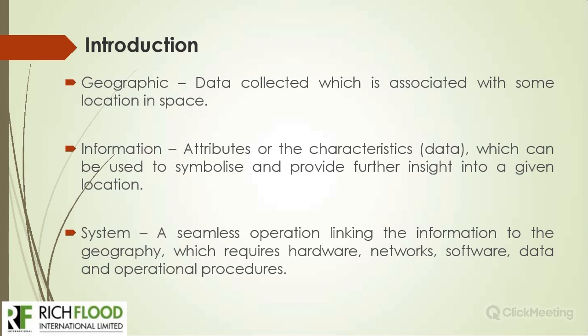Information itself refers to the attributes or characteristics — the data — which can be used to symbolize or provide further insight to the location. The information or data that we get from the field has characteristics which you can actually describe, just like humans. We are all different in our own unique way — some people are tall, some are short. So all the information collected which is used in this technology has attributes, and you can actually have a database for all that information as part of the database management system for your GIS. That is where you introduce all the information and attributes of the data you've collected into your database.